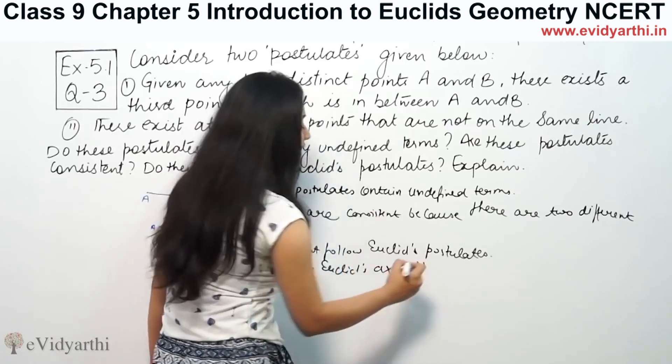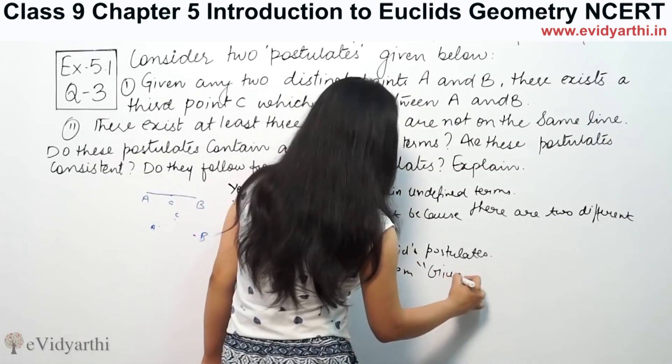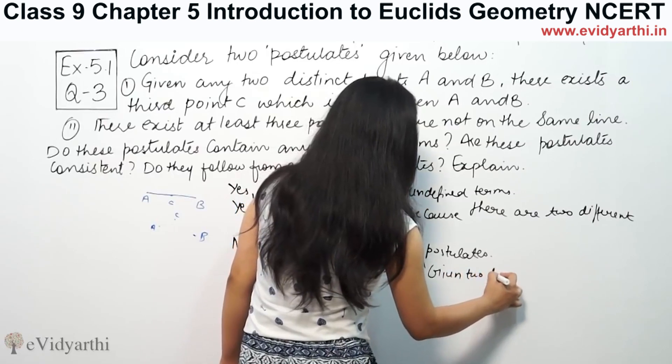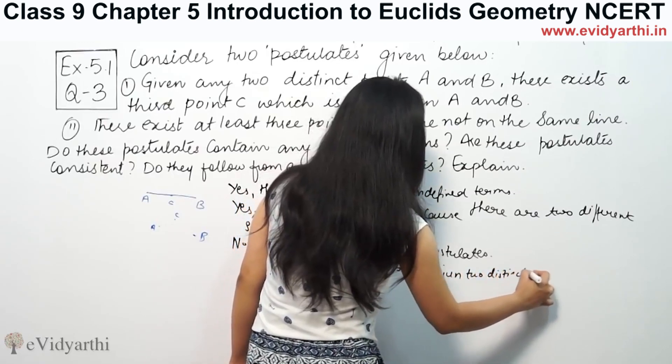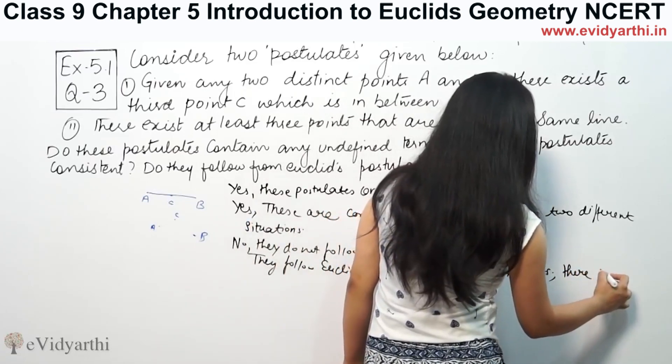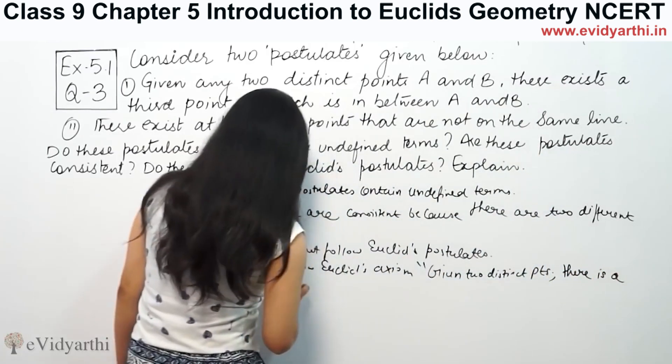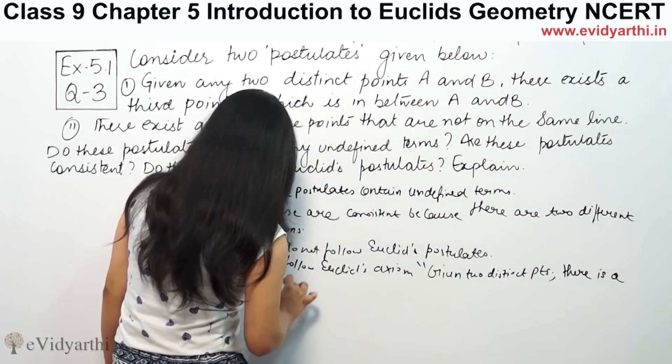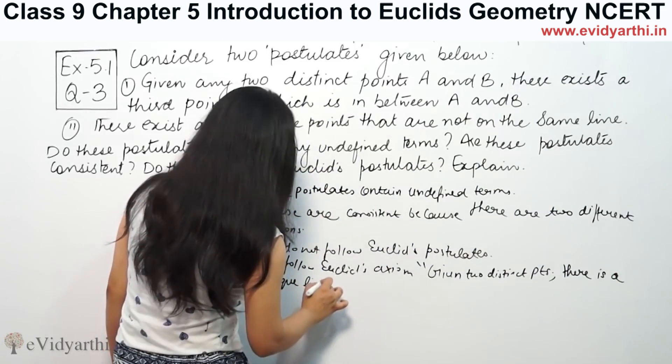That axiom is: given two distinct points, there is a unique line passing through them.